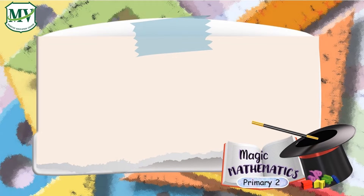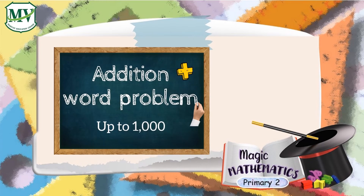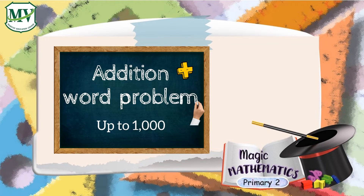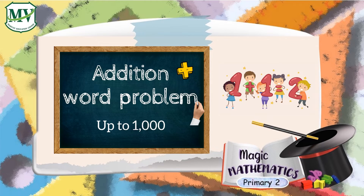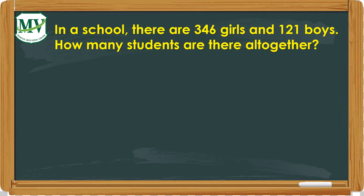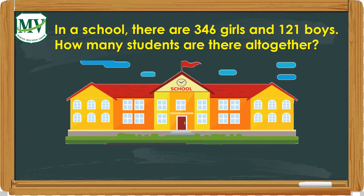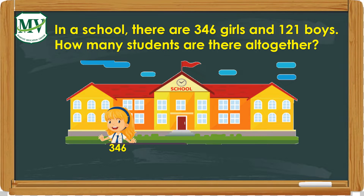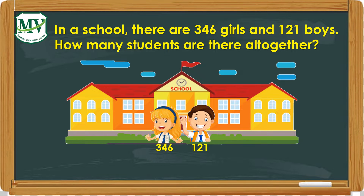Magic Mathematics presents Addition Word Problem. In a school, there are 346 girls and 121 boys. How many students are there all together?